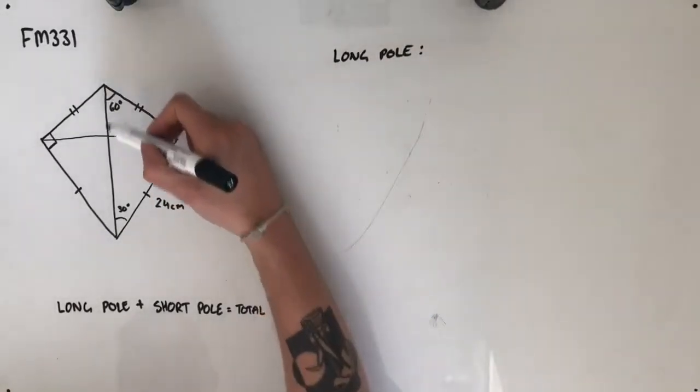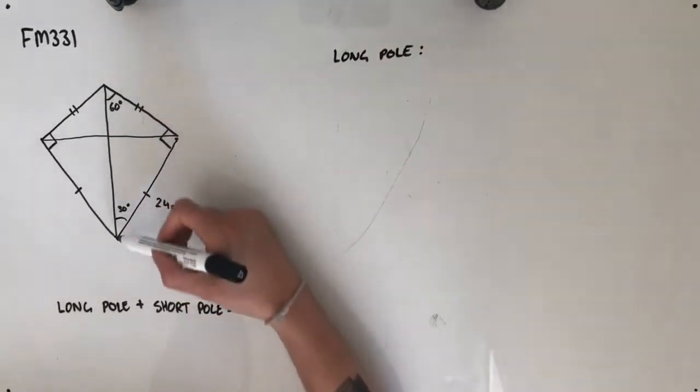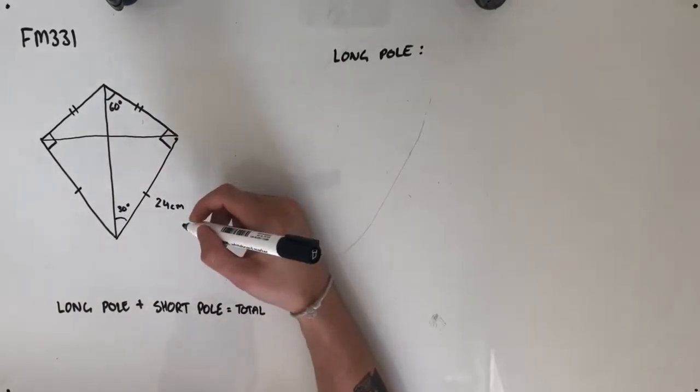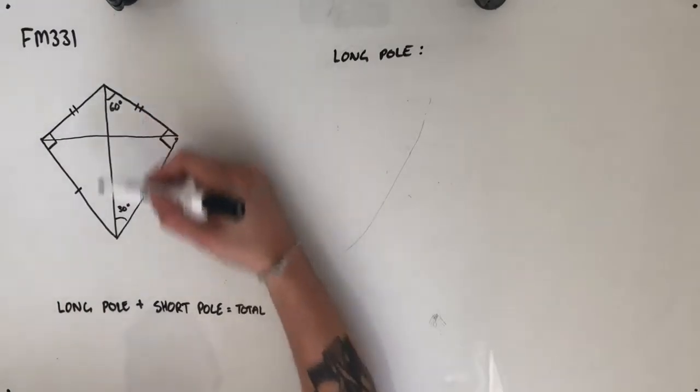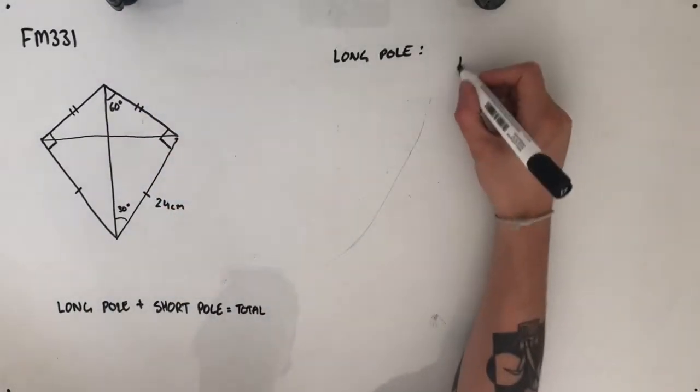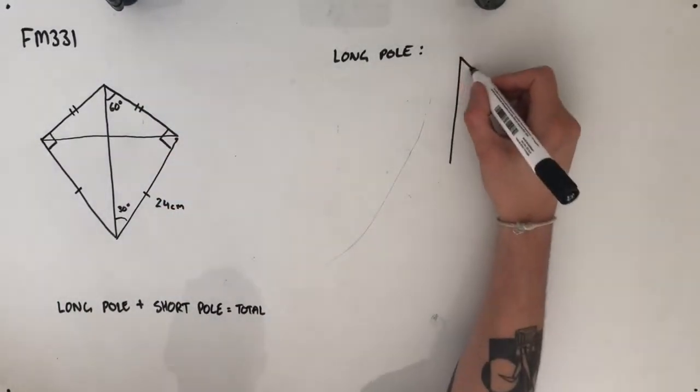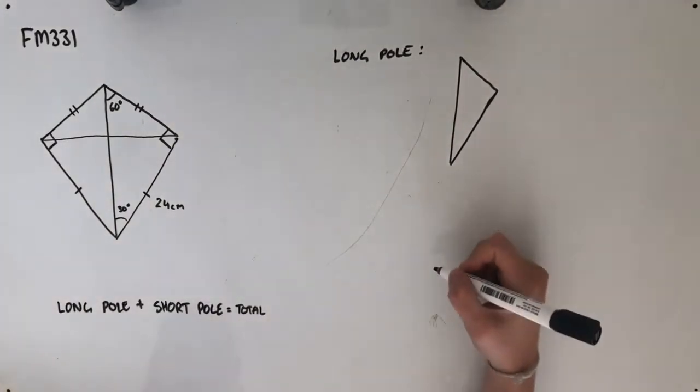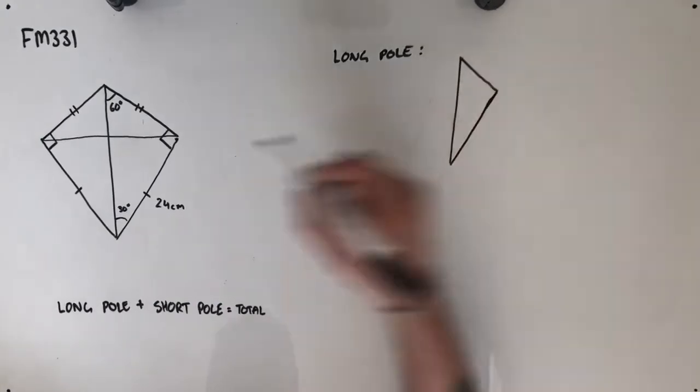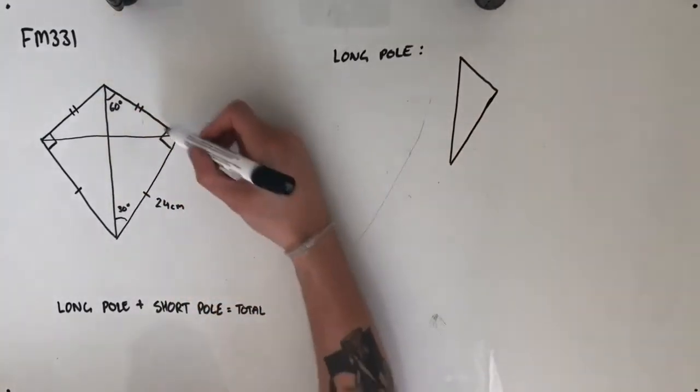So we're going to focus on this length here. Now our job is to create a scenario in which we are able to find this length. The one that I'm going to use is by taking the right angle triangle that's given to us on the right hand side of this triangle. So this right angle triangle here.